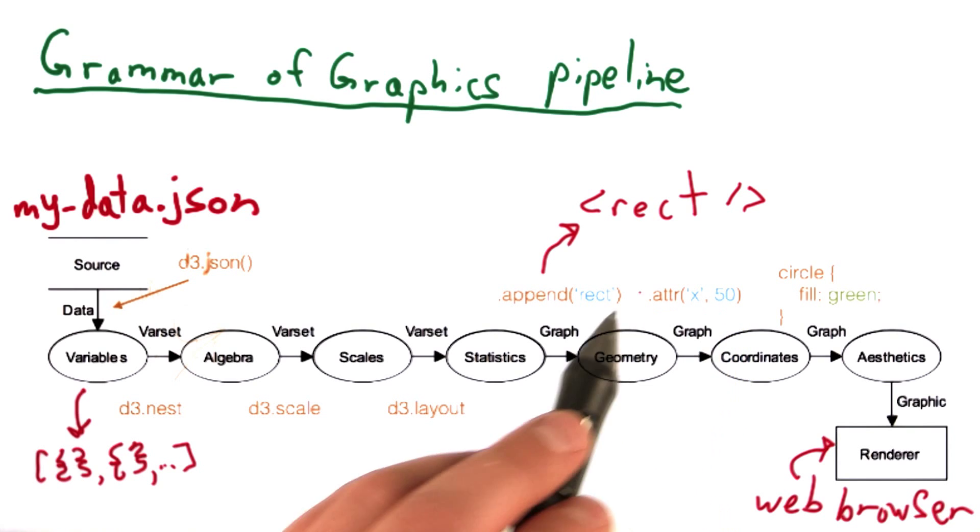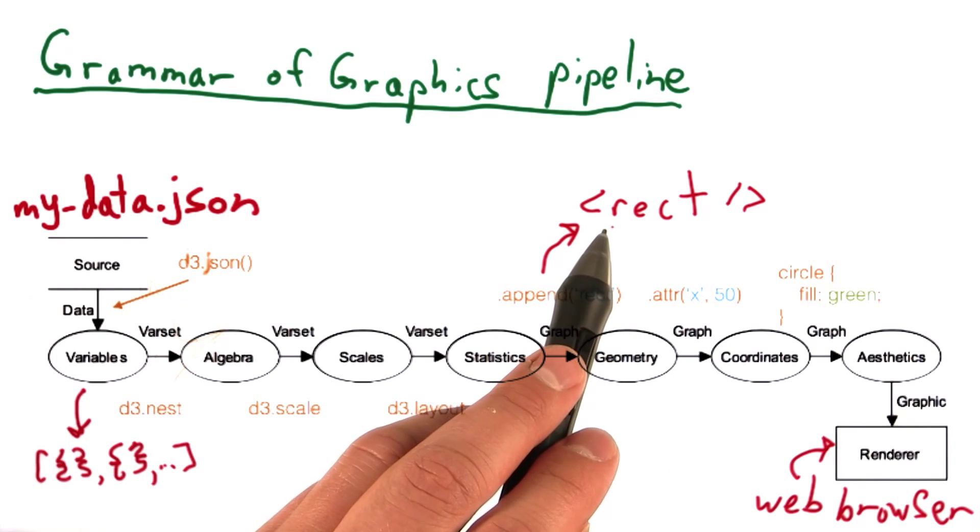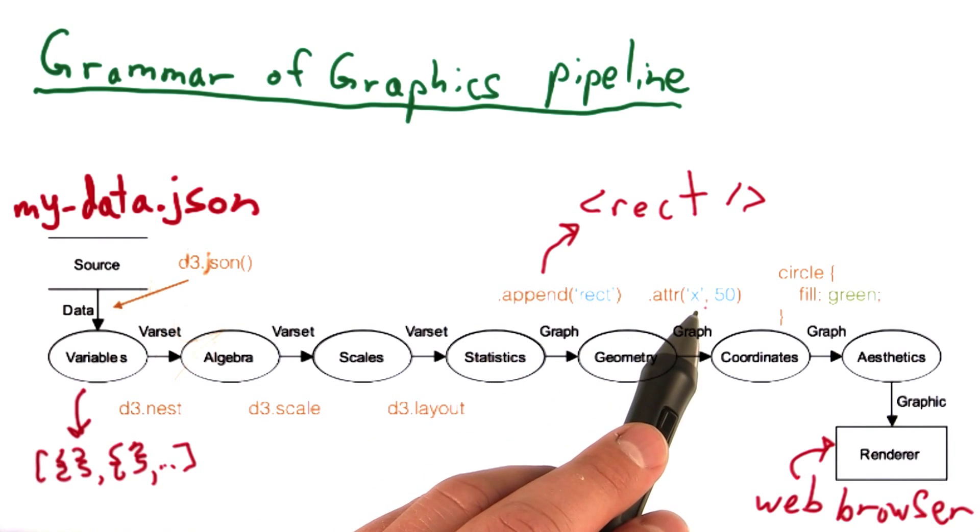.attr changes some attribute of whatever we're appending. In this case, rectangle.attr changes where we want to position our rectangle, its x coordinate, and specifies the value where we want to position it.